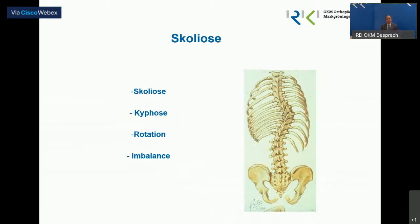Hier ist nochmals eine Zeichnung der Wirbelsäule mit einer Skoliose. Es handelt sich nicht nur um eine Seitausbiegung, sondern es spielt auch das Seitprofil eine Rolle – es kann eine Kyphose auftreten. Immer dabei bei einer echten Skoliose ist die sogenannte Rotation: Die Wirbel verdrehen sich und nehmen die Rippen mit. Was besonders bei älteren Patienten oder bei neuromuskulären Skoliosen eine große Rolle spielt, ist die Balance – dass das sagittale oder frontale Lot nicht mehr stimmt und der Patient aus dem Lot steht.